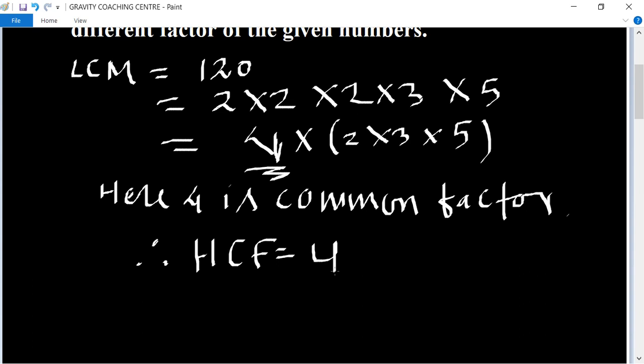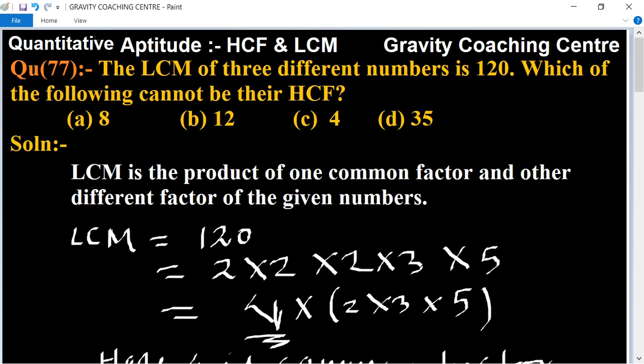Now we check which option is not a multiple of 4. 8 is a multiple of 4, 12 is also a multiple of 4, 4 is also, but 35 is not a multiple of 4. So option D is the right answer.